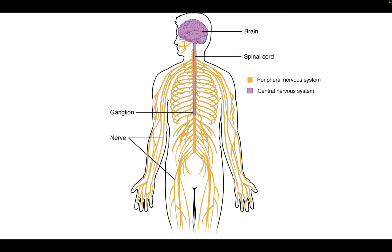Here is an overlay of the two of them — the spinal cord and the brain — showing the central nervous system and then all of the nerves, all of your neurons.